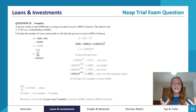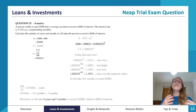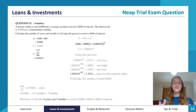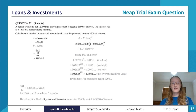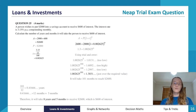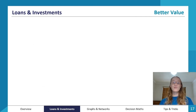So that's how to approach a question like this. It's important to note we don't just use the compound interest formula when the amount is unknown — like any other formula, we can rearrange it and solve for other variables.